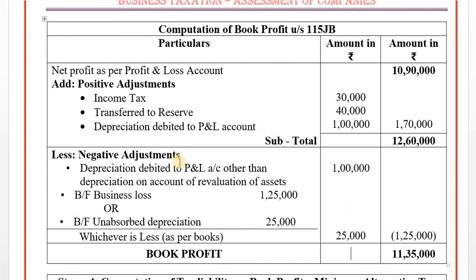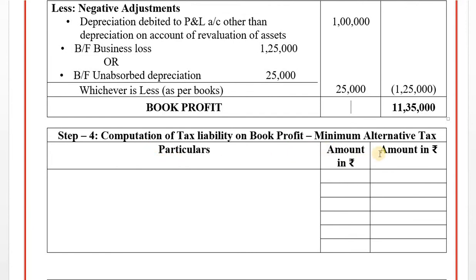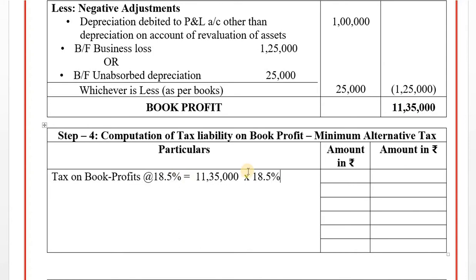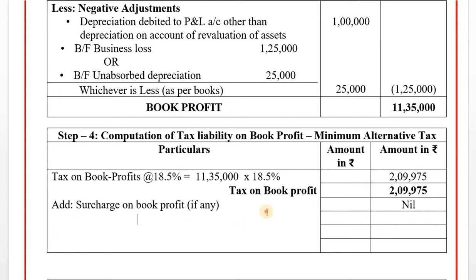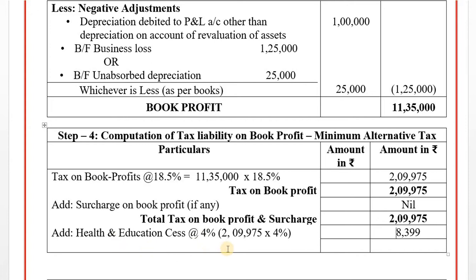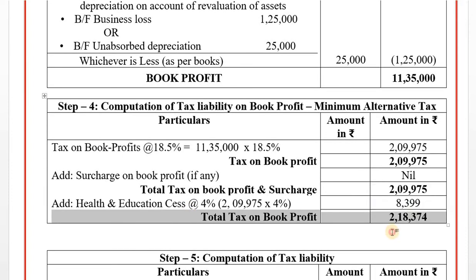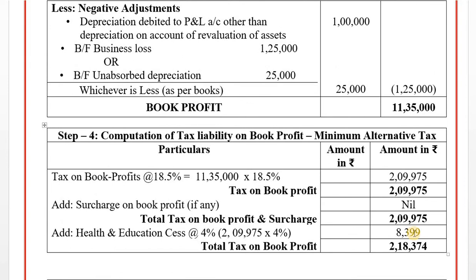Step 3 gives us the book profit. Step Number 4: Computation of tax liability on book profit - Minimum Alternative Tax (MAT). Book profit tax rate is 18.5%. 11,35,000 × 18.5% = Rs. 2,09,975. Book profit is below 1 crore, so surcharge is nil. Adding health and education cess at 4%: Rs. 8,399. Total tax on book profit: Rs. 2,18,374.